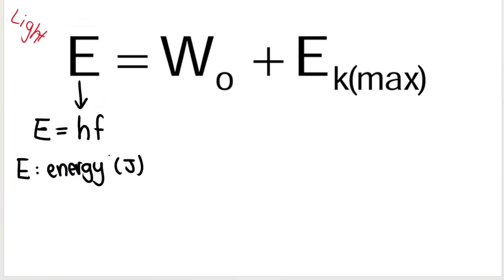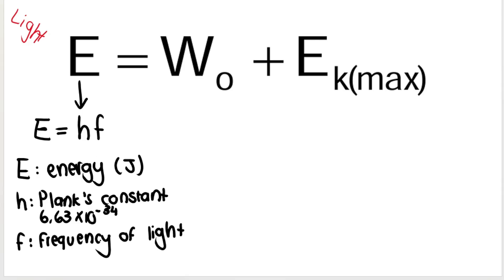E is energy measured in joules. H is Planck's constant, 6.63 times 10 to the negative 34. F is frequency, in particular frequency of light measured in Hertz. They will refer to this as the energy of the light or the energy of the incident photon.